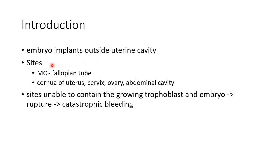Now let us see about the various sites of ectopic pregnancy. The most common site is the fallopian tube. Other sites include the cornu of the uterus, cervix, ovary, and abdominal cavity. These sites are unable to contain the growing trophoblast and embryo, so at one point in time they rupture and cause catastrophic bleeding.